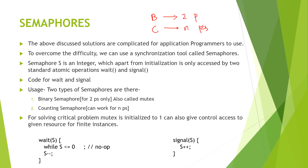In binary semaphore, only one process is executing and the other one is waiting. Semaphore will take care of all three conditions needed for synchronization: mutual exclusion, progress, and bounded waiting.